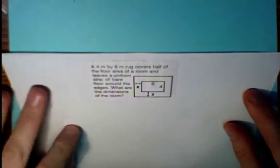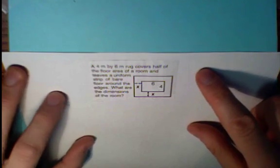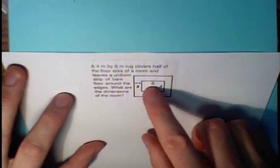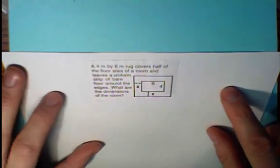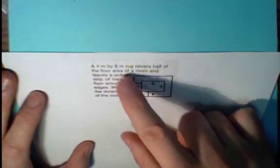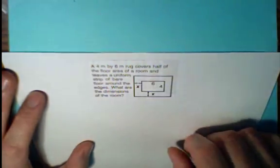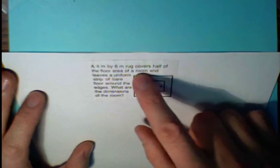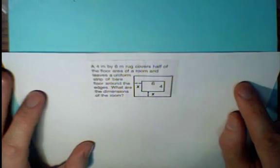In this problem, it's a little more complicated. We have an area rug in the middle of a room. It says a 4 meter by 6 meter rug covers half the floor area of a room and leaves a uniform strip of bare floor around the edges. What are the dimensions of the room?